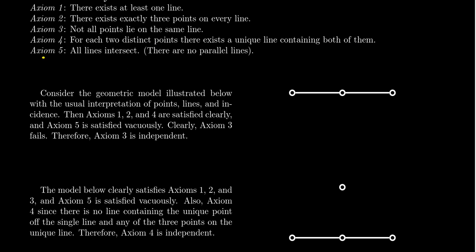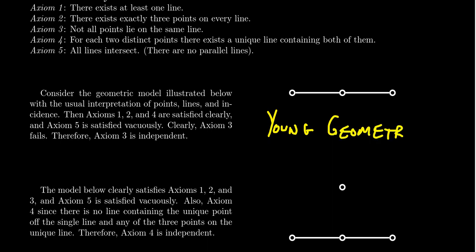The last one: why is axiom five independent? Can we construct a geometry which satisfies axioms one, two, three, and four, but violates axiom five — that is, there are parallel lines? We're going to do that in the next lecture. Lecture five is about what we call Young geometry, a finite geometry that will do exactly this. The first four axioms of Young geometry are identical to the first four axioms of Fano geometry, but axiom five is replaced with a different axiom that actually guarantees the existence of parallel lines. Therefore, Young geometry will show that axiom five is independent.